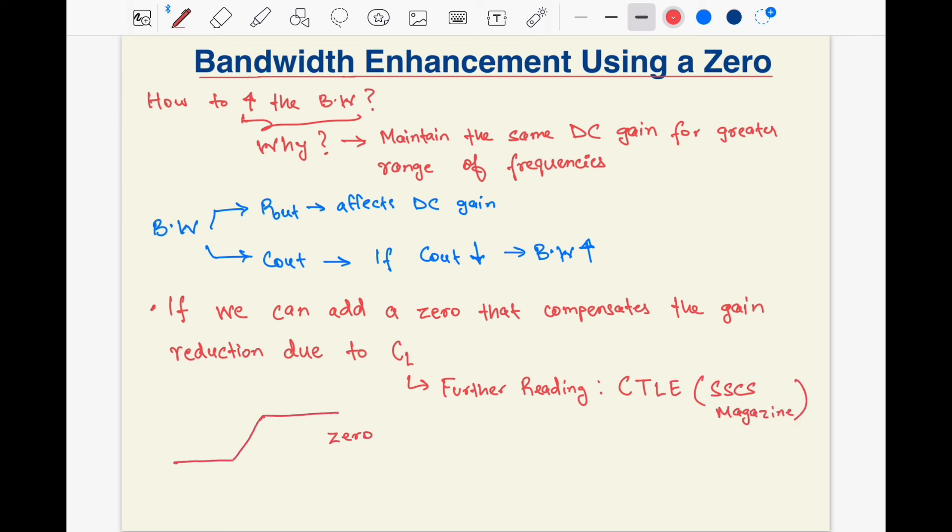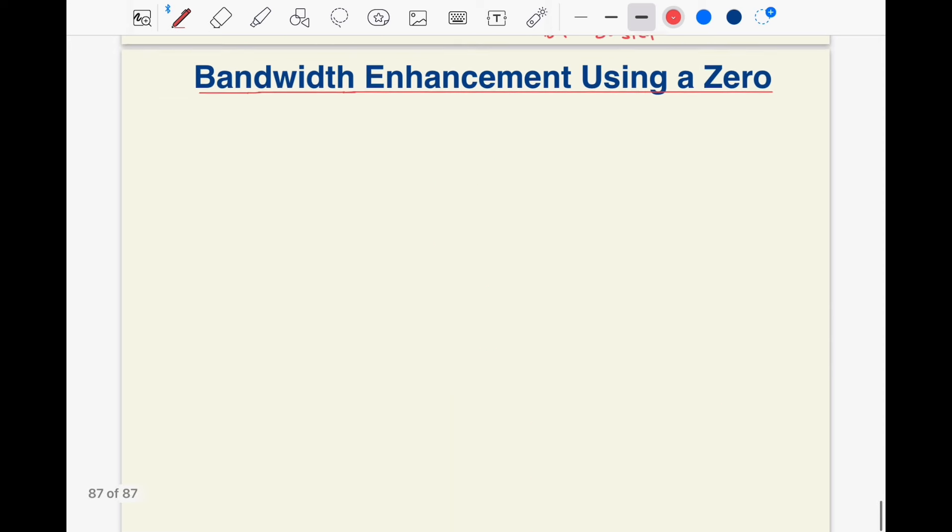So if we add this on top of the existing Bode plot of the common source amplifier, then we can essentially boost the bandwidth as shown here. A similar technique is commonly utilized in continuous time linear equalization (CTLE). There's an interesting article about it in the IEEE Solid-State Circuits Magazine as well.